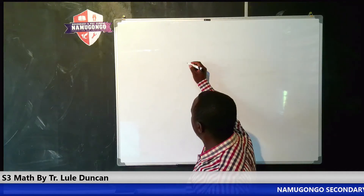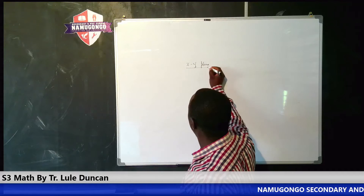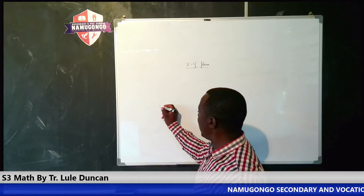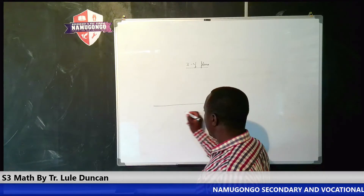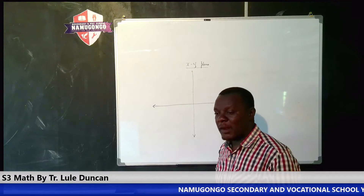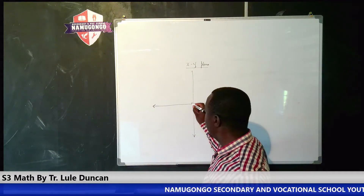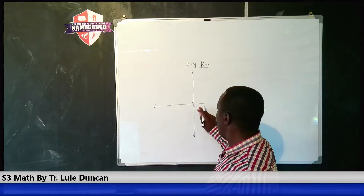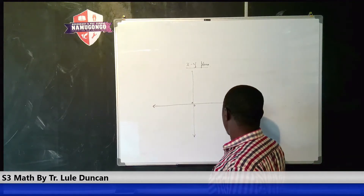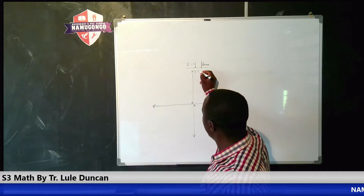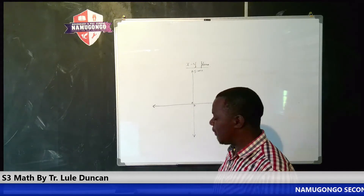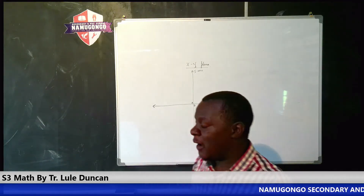The XY plane is a grid of two number lines. We have two number lines, one drawn in the horizontal sense, the other drawn in the vertical sense. Where those two number lines meet, we shall call that the origin. The number line that is lying horizontal is called the X axis, and the vertical axis is the Y axis.